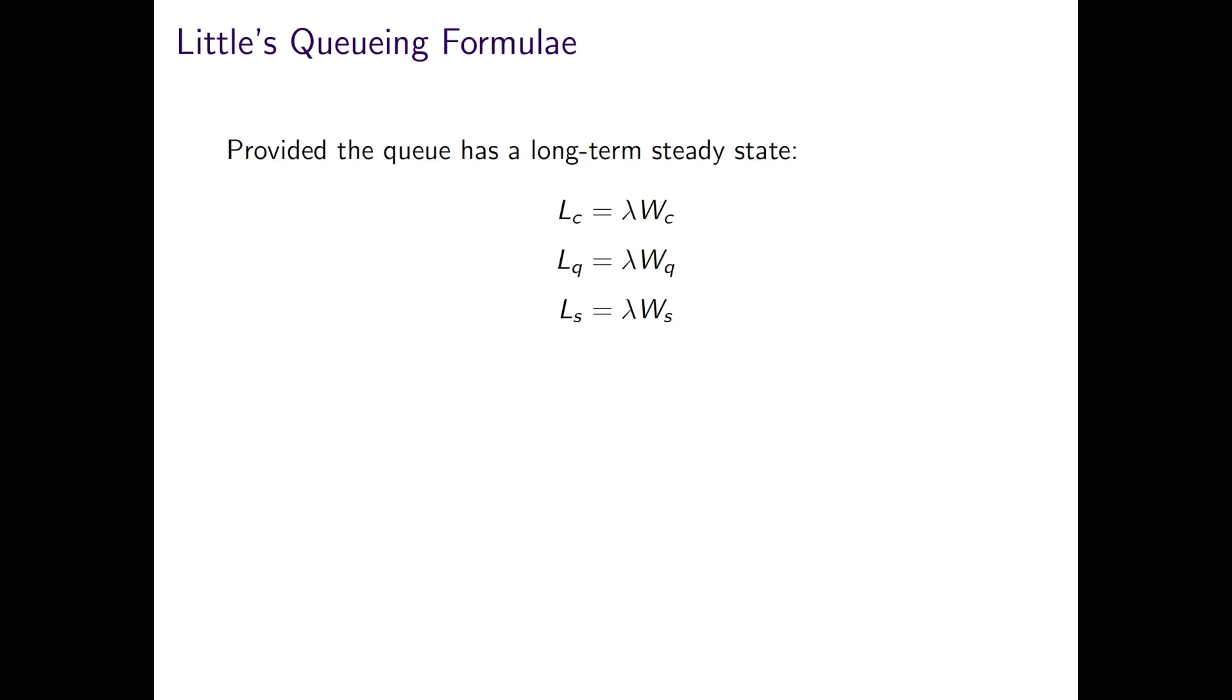We can also make use of Little's queuing formula, which says that in steady state, the average number of patients in the system, L, is equal to the average arrival rate multiplied by the average time a patient waits in the system. This indeed holds for any queuing systems in steady state.